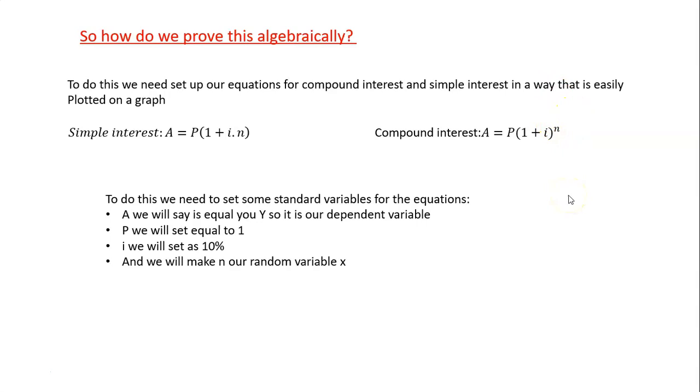Right now looking at these equations, we can't plot these on our standard Cartesian axes because there's too many variables in play. We have initial value, we have our interest, we have our time, we have our final value. There's too many variables in place. So we have to try to change how these equations look to make it in a way that we can actually plot these on axes. And the way we do this is that we say A is set equal to y, so it's our dependent variable. So we're just going to switch that A with a y so that we can plot it on our x, y Cartesian axis.